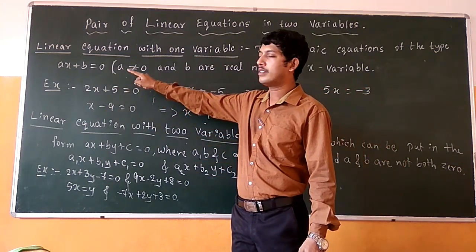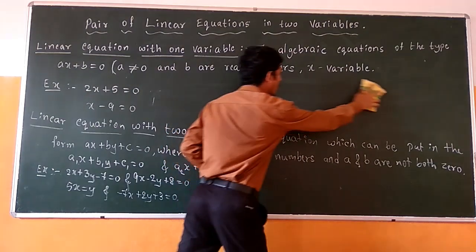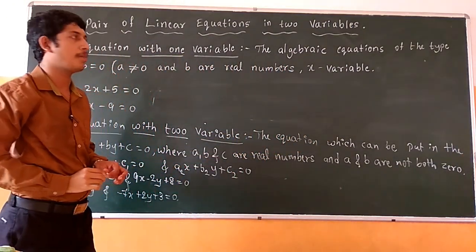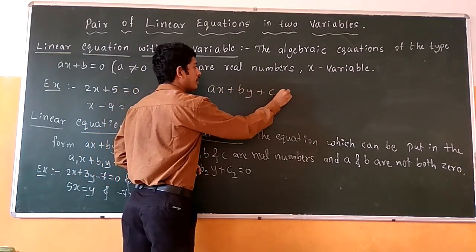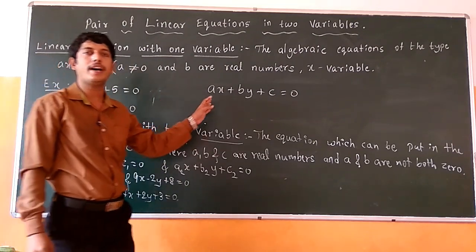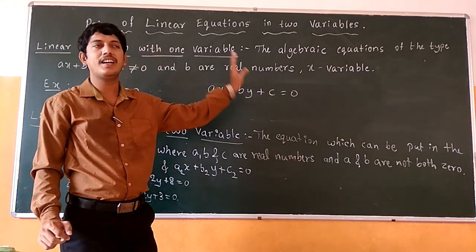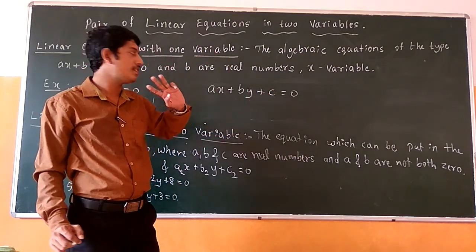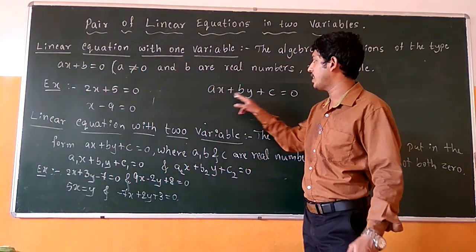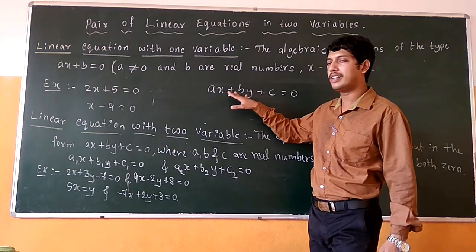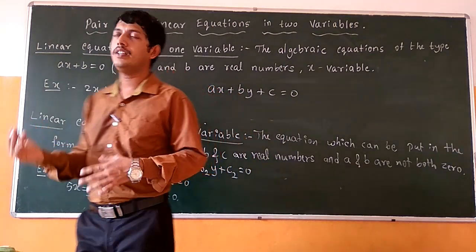In this equation, a, b, and c are the three real numbers, and x and y are the variables. This equation contains two variables, therefore it is known as a linear equation in two variables. The definition is: the equation which can be put in the form ax plus by plus c equals to 0, where a, b, and c are real numbers, and a and b are not both zeros, and x and y are the variables.